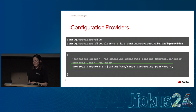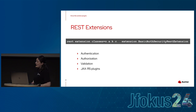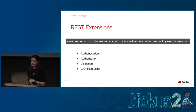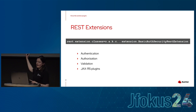You can also implement your own configuration provider. The next worker plugin is REST extensions, which allow you to customize the Connect REST API by injecting JAX-RS components — you can inject filters to access and modify request and response headers, and use interceptors as well. The BasicAuthSecurityRestExtension is one that Kafka provides, letting you add authentication, authorization, and validation.